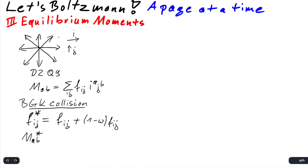And because this is a linear operator, it can be equally written in terms of moments: post-collision moments M_a,b* equals M_a,b before collision plus one minus omega